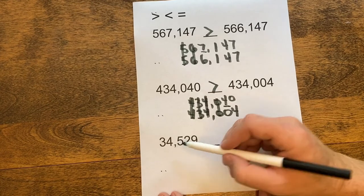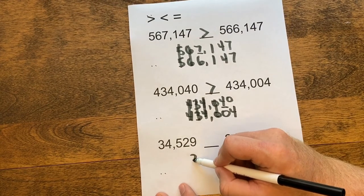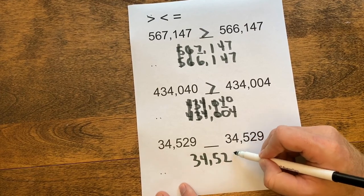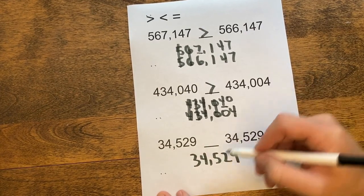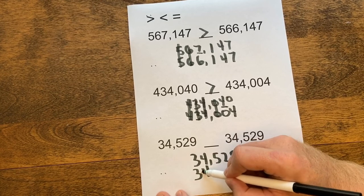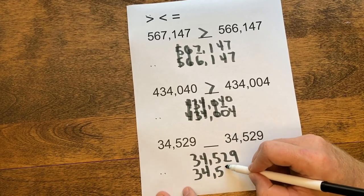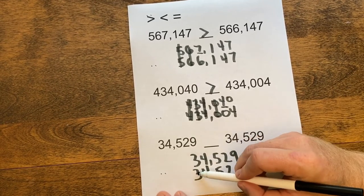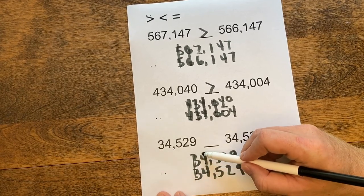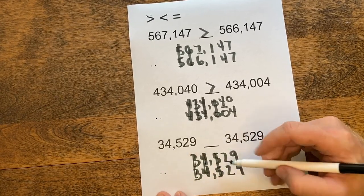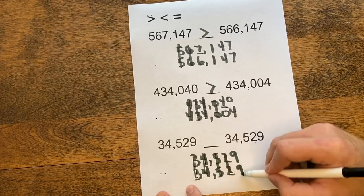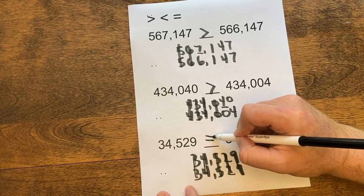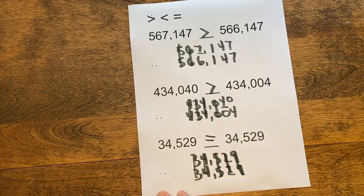Finally, I have 34,529. I'm going to carefully line up my place value spots: 34,529. I'm going to start comparing from the left. 3's are the same, 4's are the same, 5's are the same, 2's are the same, and 9's are the same. So these two numbers are equal. Good luck everyone!